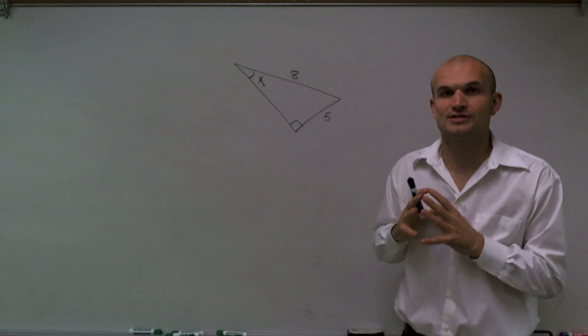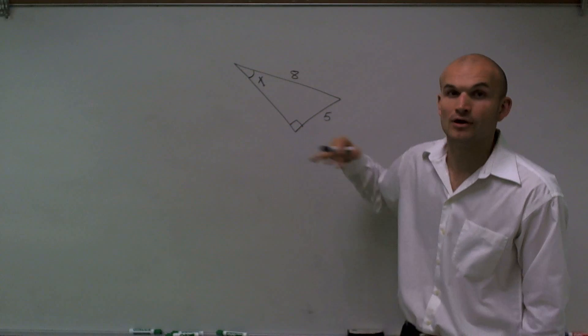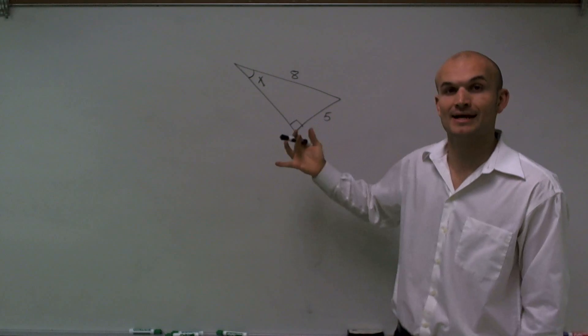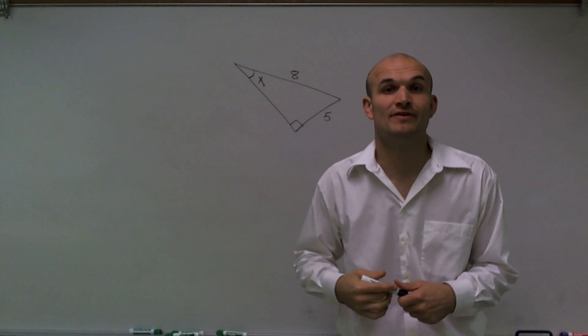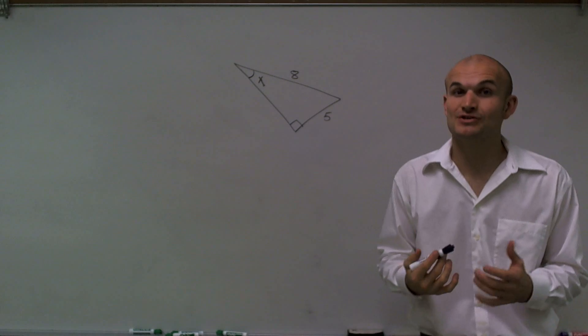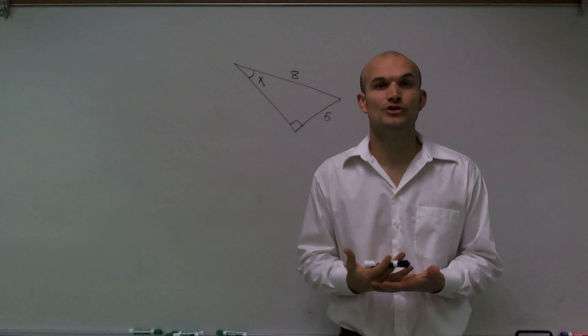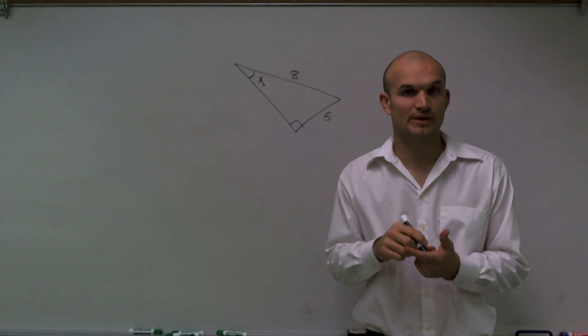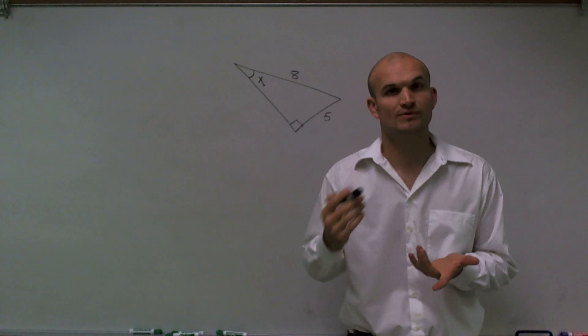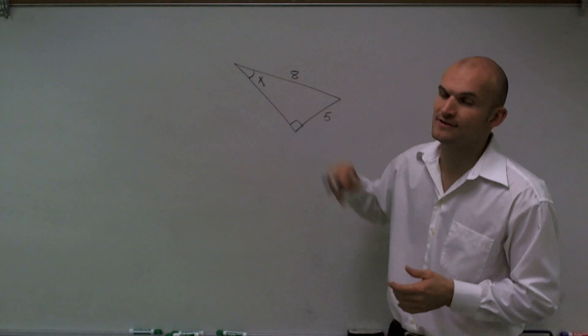The important thing to understand about this triangle is I have this little square at this angle, and what that represents is a right angle. When we have a right angle, we have a right triangle. When we have a right triangle, there's a lot of things we can do. One is we can apply the Pythagorean theorem when we're dealing with side lengths, but here we need to find a missing angle.